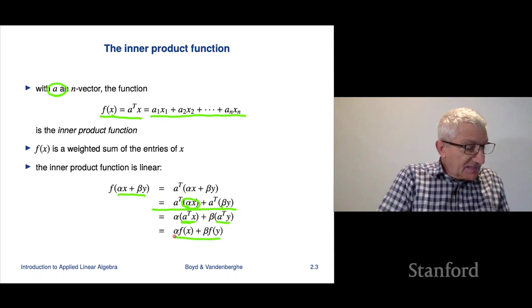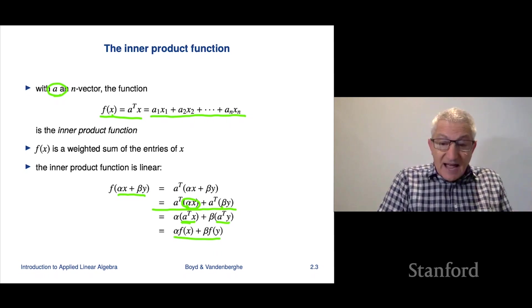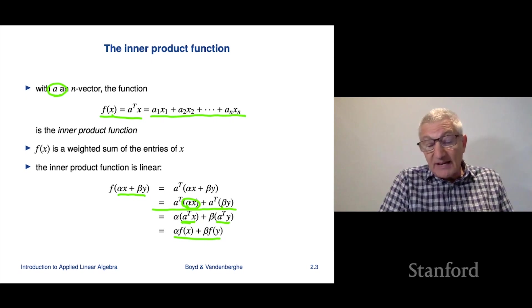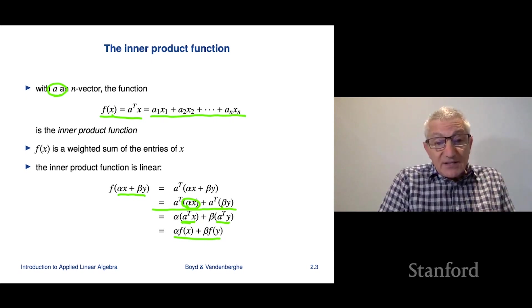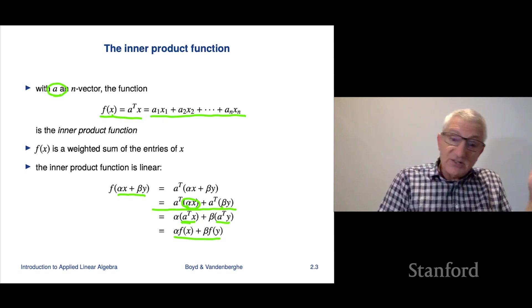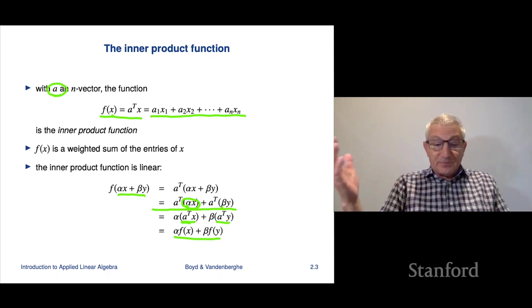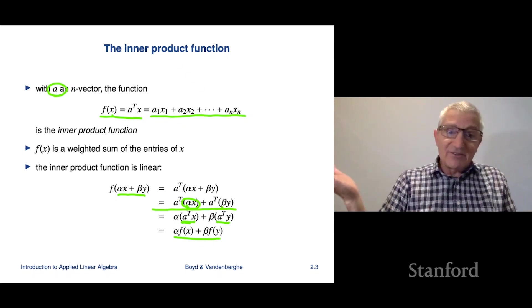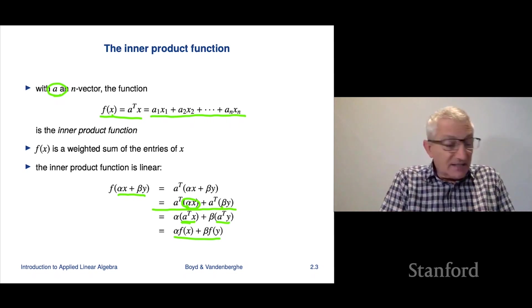And then we recognize inner product of a with x and inner product of a with y. Those are nothing but f of x and f of y. So we get this, and sure enough, this says that f of alpha x plus beta y is alpha f of x plus beta f of y. And that holds for any x and y, any alpha and beta. So that means it's linear. So there are linear functions. Any inner product function is a linear function.